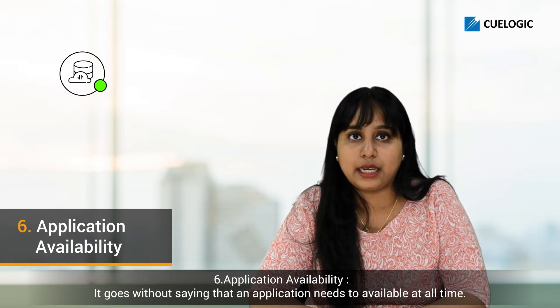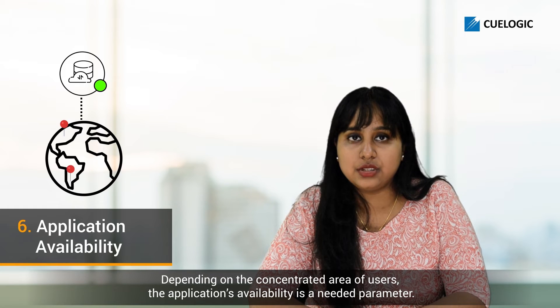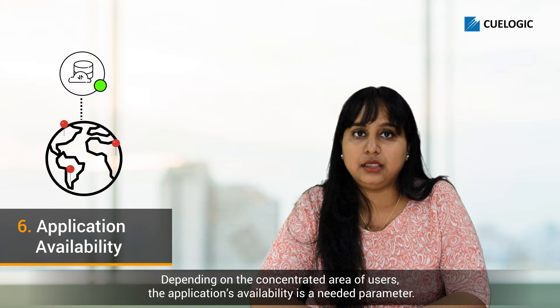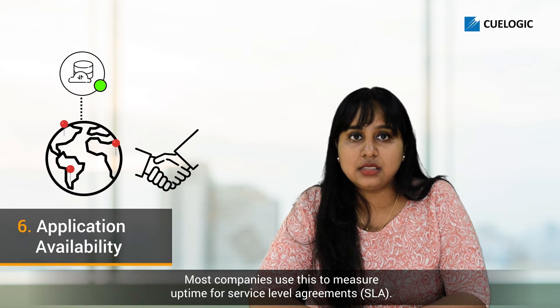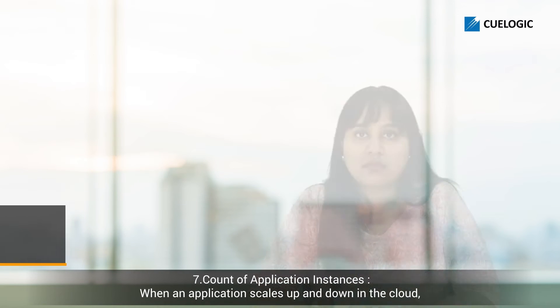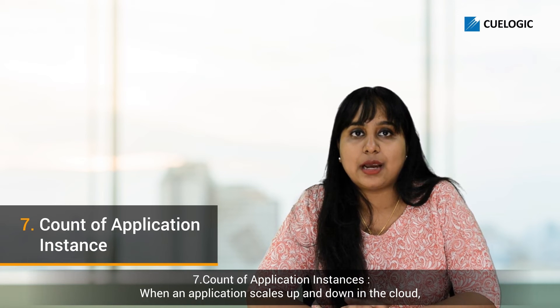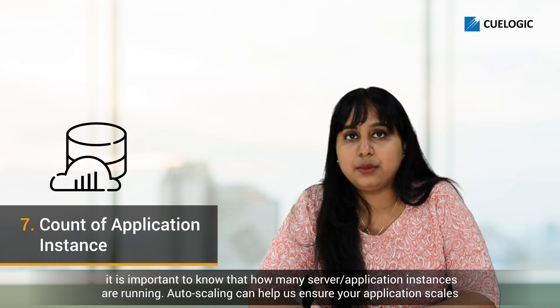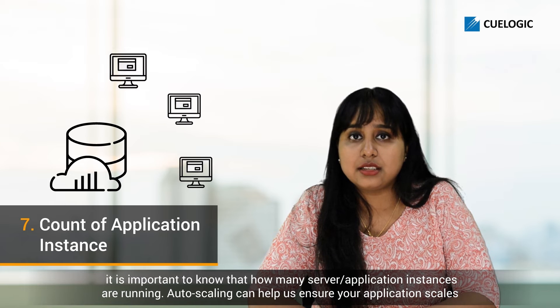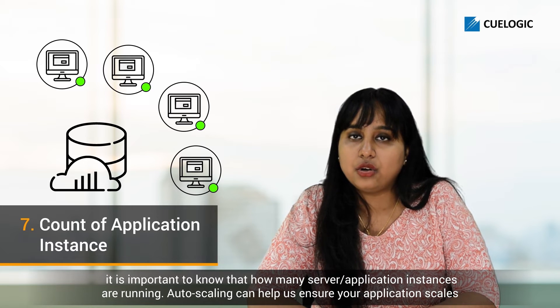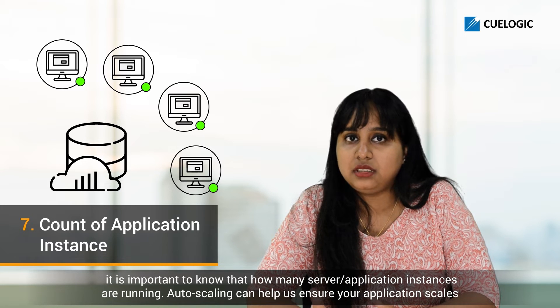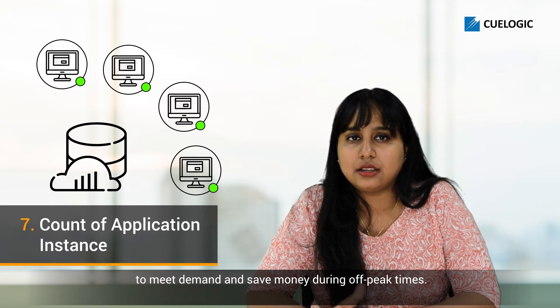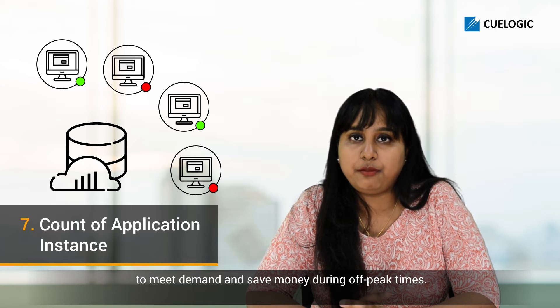Next, let's speak about the application's availability. It goes without saying that an application needs to be available at all times. Depending on the concentrated areas of the users, availability is a needed parameter. Most companies use this to measure uptime for service level agreements. Next, let's speak about the count of application instances required. When an application scales up and down in the cloud, it is important to know how many servers or application instances are running. Autoscaling can help ensure your application scales to meet demands and save money during off-peak times.